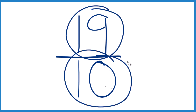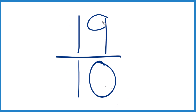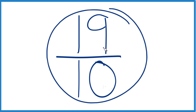The problem is, the only whole number that's going to go evenly into 19 and 10 is 1. That's our common factor. And if you divide 19 by 1 and 10 by 1, you get 19 tenths again. That means that this is already simplified.